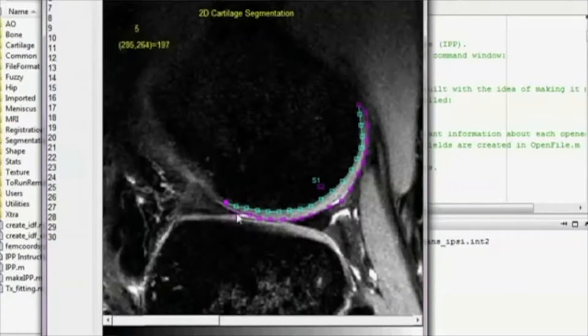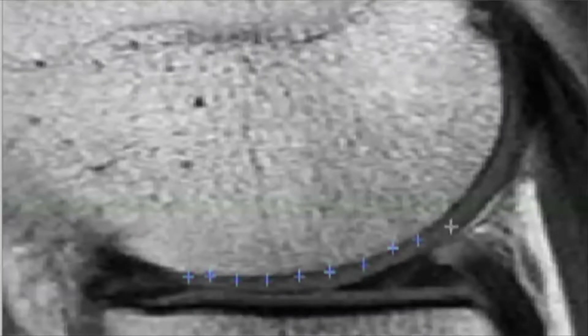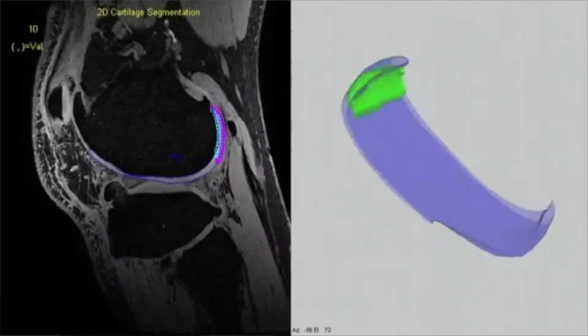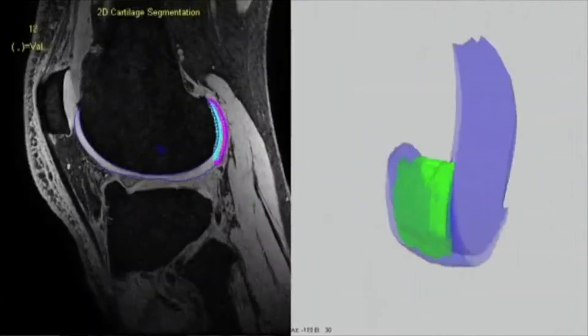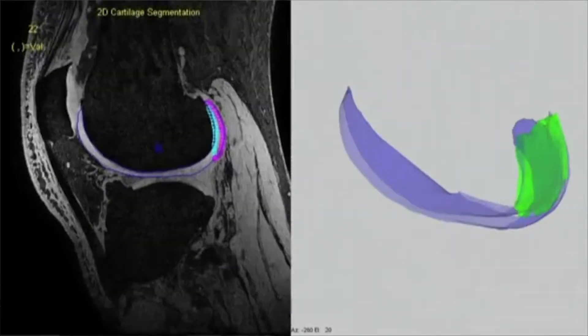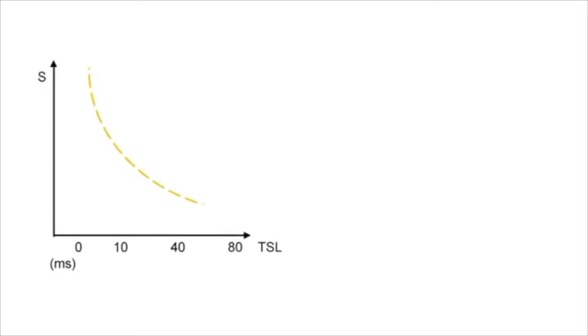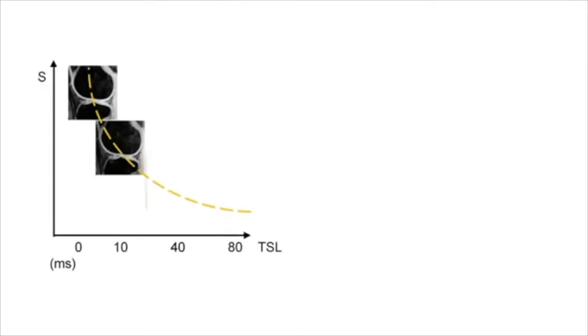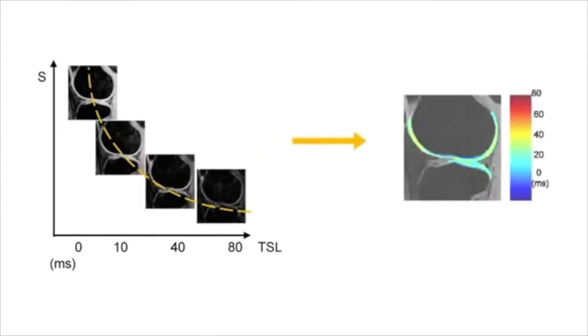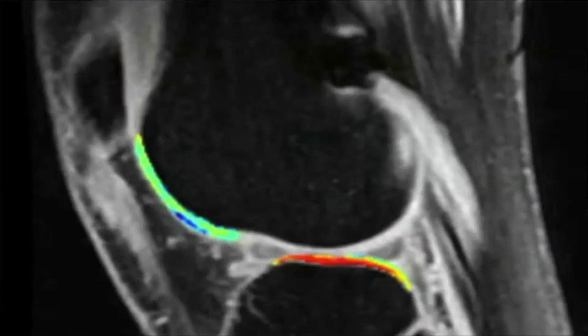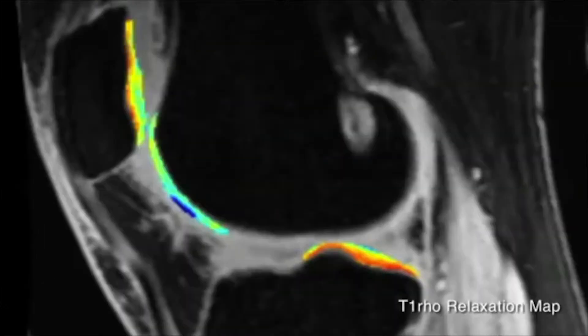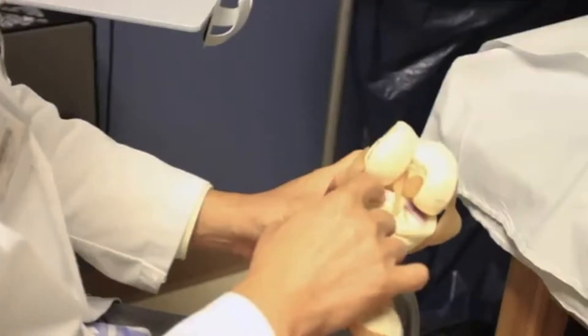Machine learning defines a set of techniques in which you teach a machine to solve a problem as a human would do, and in medical imaging that becomes transforming an image into information — information that can be used by radiologists and clinicians for a better characterization of the disease and a prediction of outcomes.